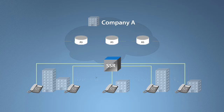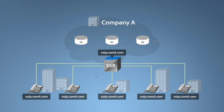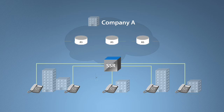The SIP phones are configured with a single abstract address. Requests are sent to the SSR, which determines the appropriate SIP application server and routes the request to that platform. Since the endpoint only deals with an abstract view of the network, changes to the physical network won't disrupt service.